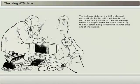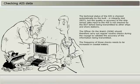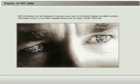The technical status of the AIS is checked automatically by the built-in integrity test (BIIT), but the quality or accuracy of the ship's sensor data input to the AIS is not checked by the BIIT before being transmitted to other ships and shore stations. The Officer on Watch should therefore carry out regular routine checks during the voyage to validate the accuracy of the information being transmitted. The frequency of those checks needs to be increased in coastal waters.